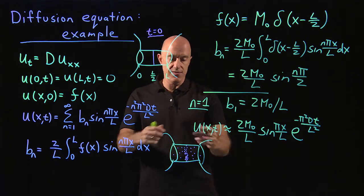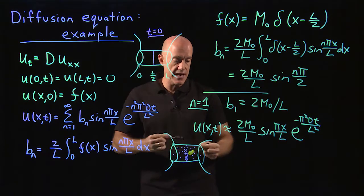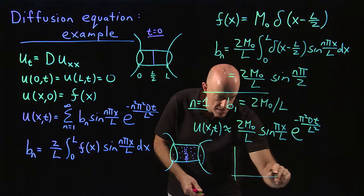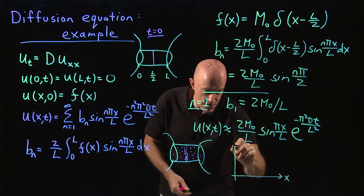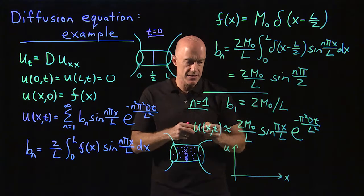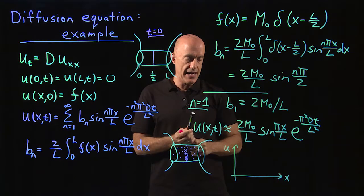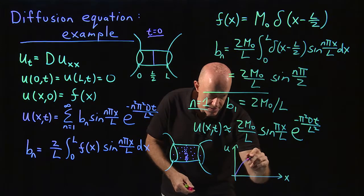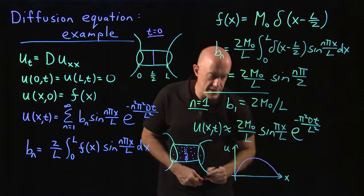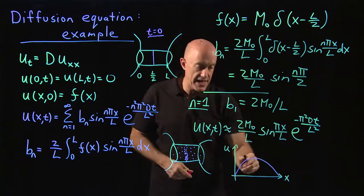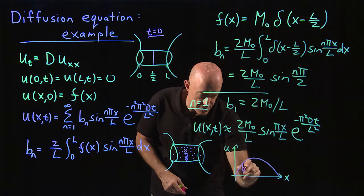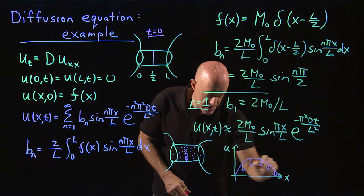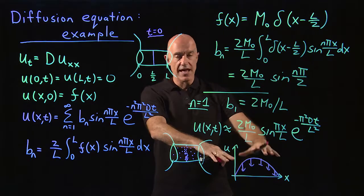So the dye has diffused. And if you look at a graph, we can graph the concentration versus X. It would look like a sine function. So it would look like this. And it would be decaying in time. So everything would be decaying down in time. Flattening out.